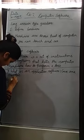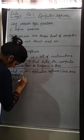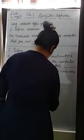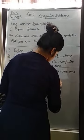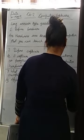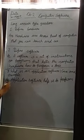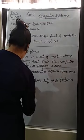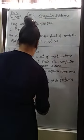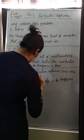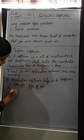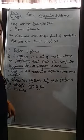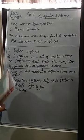Application software helps us to perform a specific type of job. Give one example — the example is MS Word. Students, for what purpose is MS Word used? It helps us to type documents. Okay, so these are the long answer type questions.